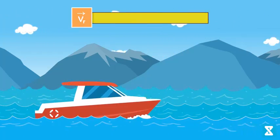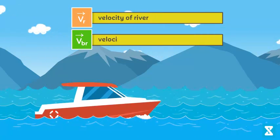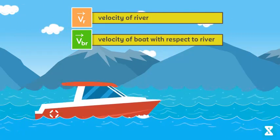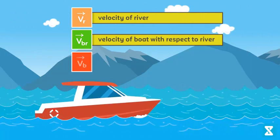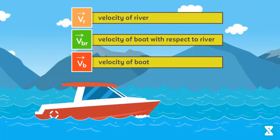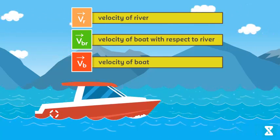VR is velocity of river. VBR is velocity of boat with respect to river, or velocity of boat in still water. VB is the velocity of boat. Now let us derive some standard results useful in riverboat problems and their special cases.